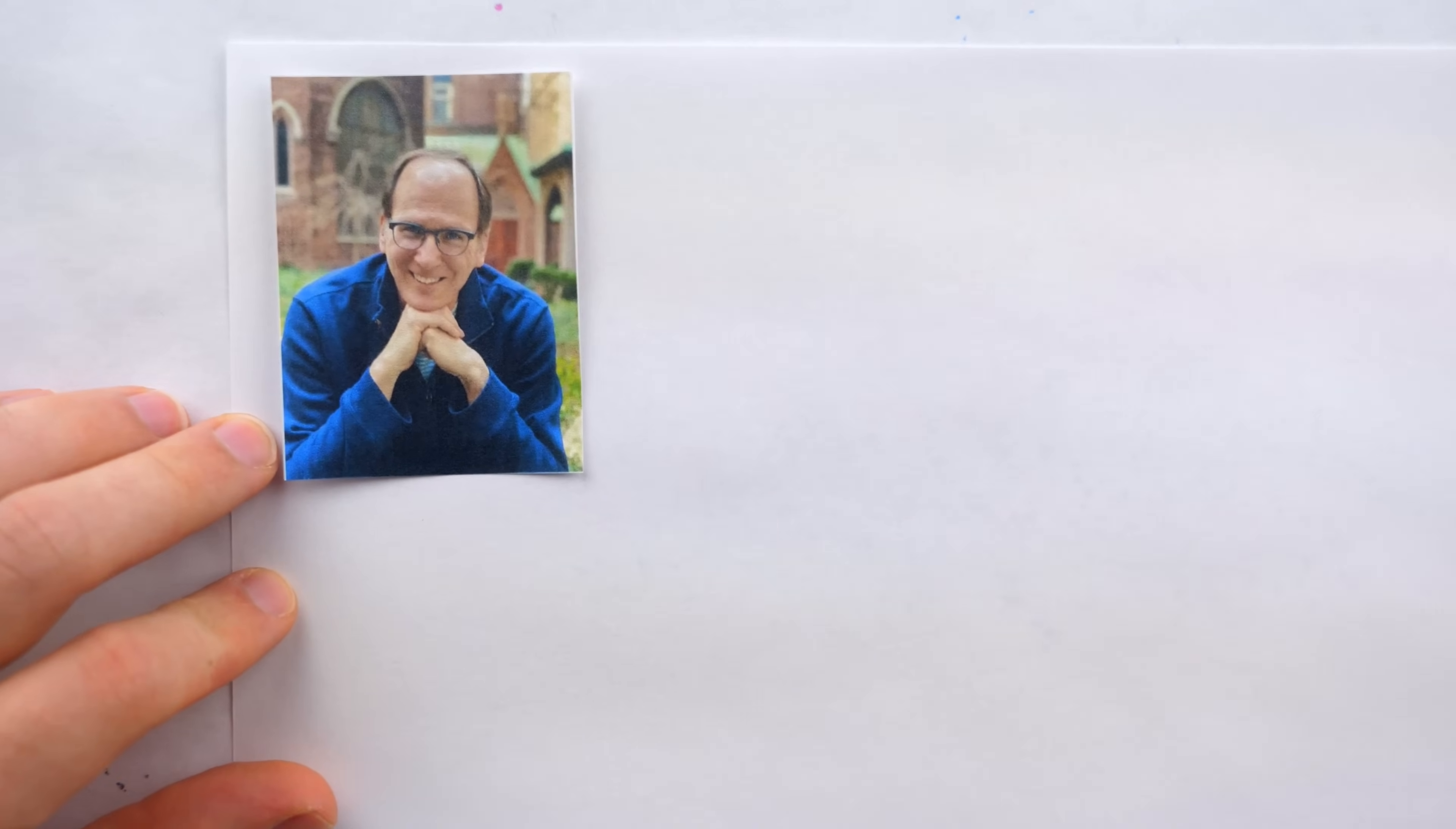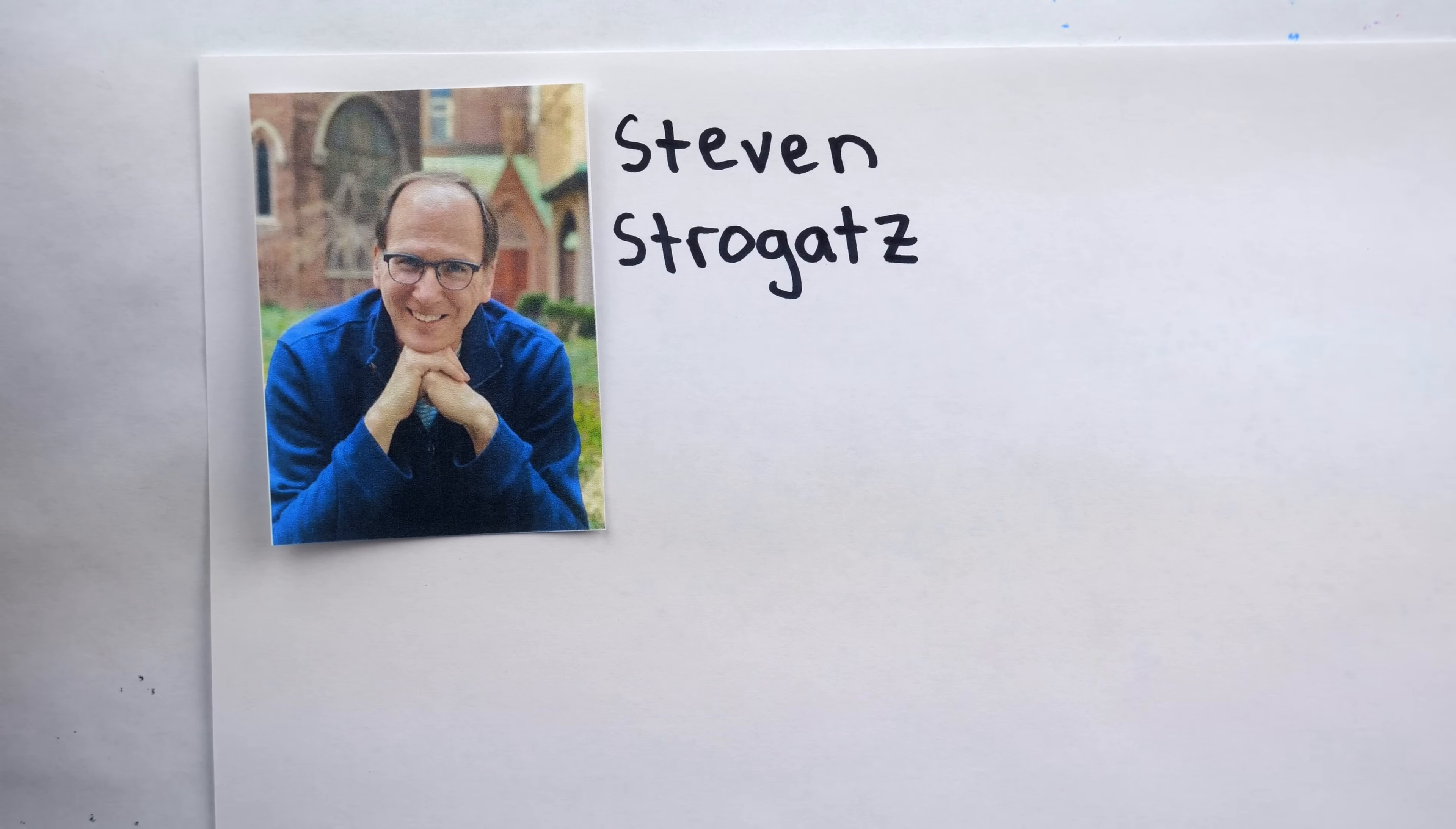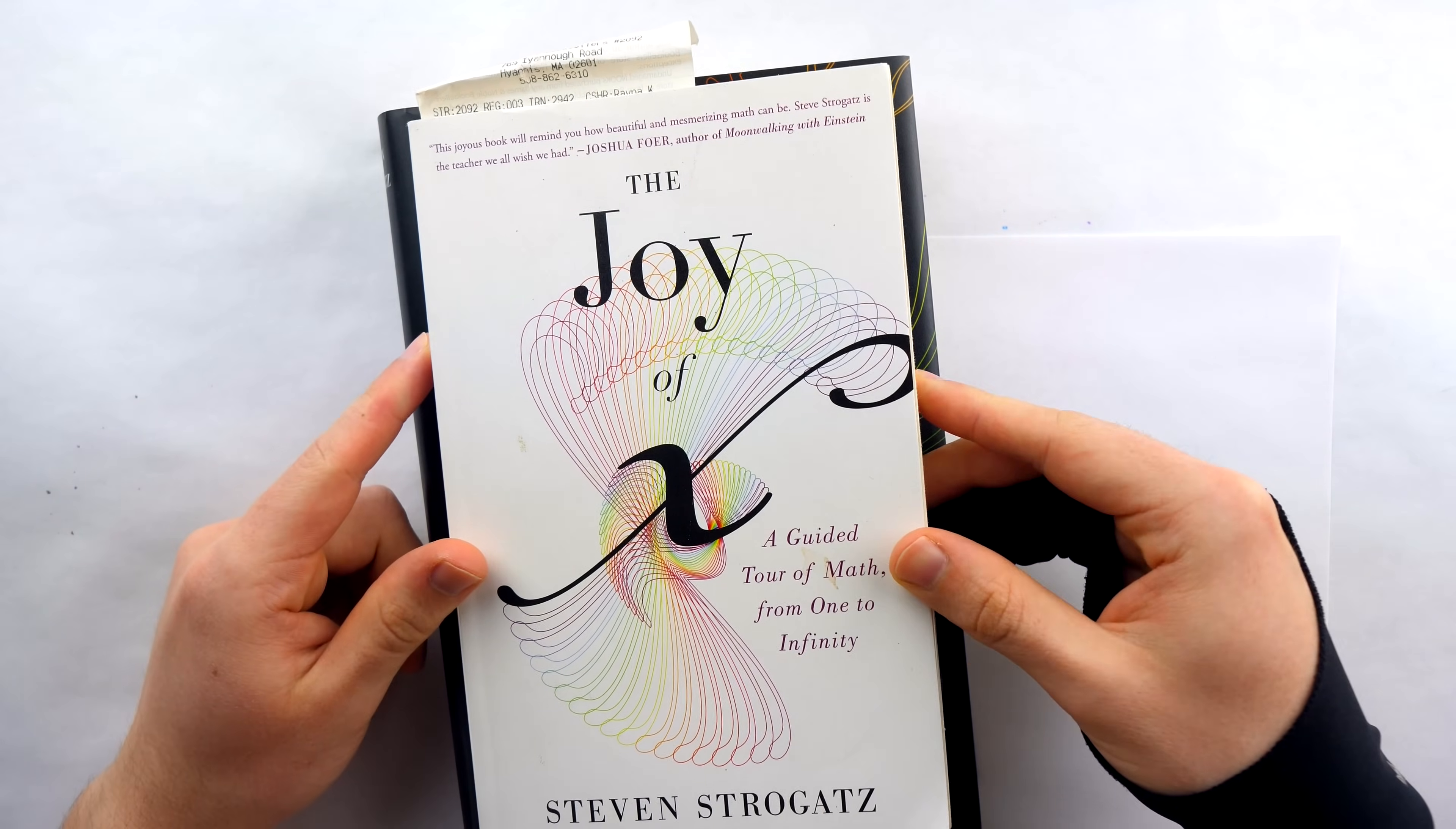This is Steven Strogatz. He's a professor of mathematics at Cornell University and the author of some great math books. I read and loved his book Infinite Powers years ago, and lately I've been reading through his older book The Joy of X.